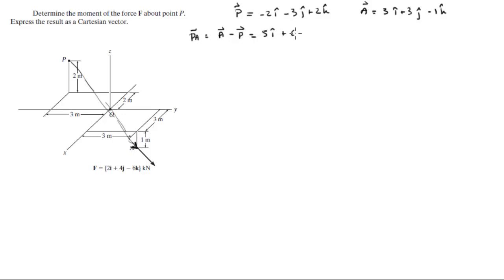Then you need the force vector which is given in Cartesian form, makes the problem very easy: 2i plus 4j minus 6k, given right here in the image. This is in kilonewtons and the distances are in meters. To find the moment that F creates about P, this is equal to PA cross F.